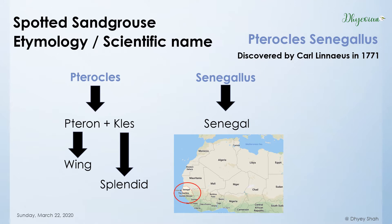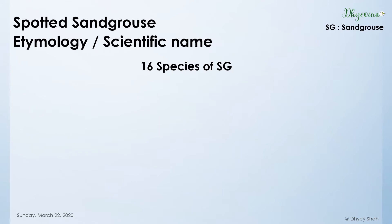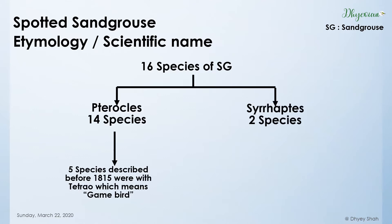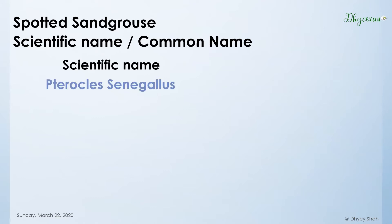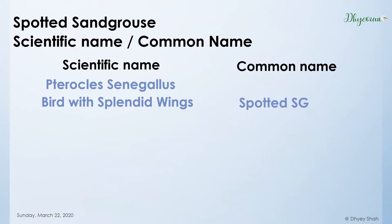A doubt arises: does every bird with a beautiful wing come under Pterocles? Currently there are 16 species of sand grouse around the world. Out of these 16, 14 come under Pterocles and 2 come under Syrrhaptes. Before 1815, the sand grouse species discovered were put under the Tetrao genus. But in 1815, Dutch zoologist Coenraad Temminck changed these 14 species to genus Pterocles. For viewers' information, Tibetan and Pallas's sand grouse belong to Syrrhaptes. So, the scientific name Pterocles senegalus means a bird with splendid wings living in Senegal.